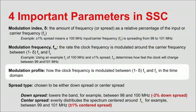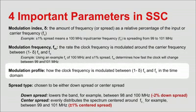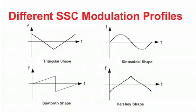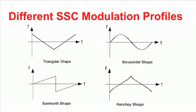The modulation profile specifies how the clock frequency is modulated in the time domain. This sweep profile can be implemented in several ways and in different shapes. TI's spread spectrum clock devices use a triangular sweep due to its relative ease of design compared to others, such as the Hershey shape.